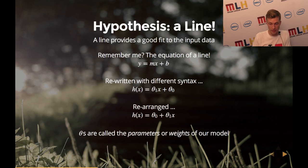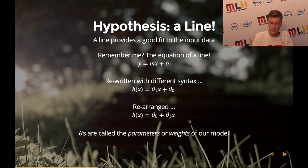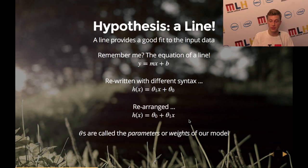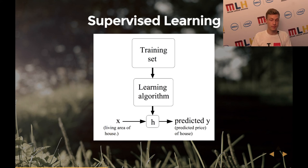Our hypothesis is a line — just y = mx + b. We need to figure out the thetas, parameters, or weights of this hypothesis function so the line fits our data well. We tweak those two knobs so the thetas line up and we have very small error between the line and all data points. Once we have this hypothesis function, we input new data — a new house area — and it predicts the price: input x, output y.